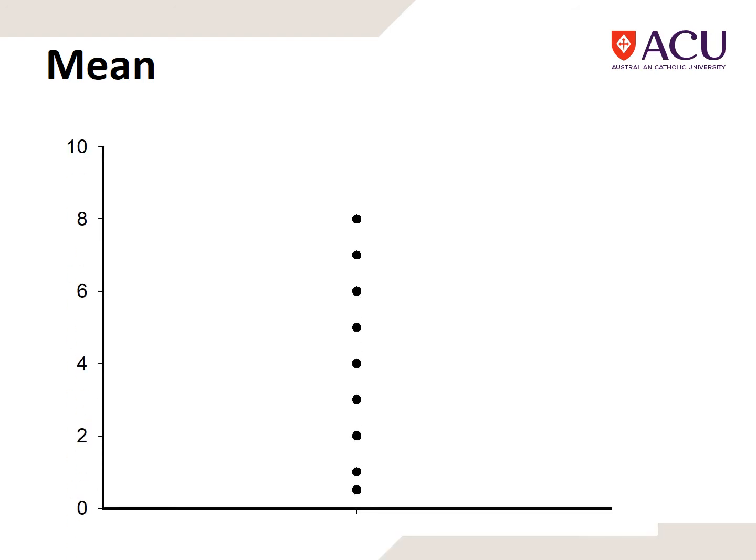If we demonstrate a set of scores that run from pretty close to zero to around eight, distributed fairly evenly—we'll talk about distribution later—the mean is around 3.84. That represents the middle ground pretty well.